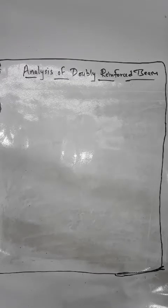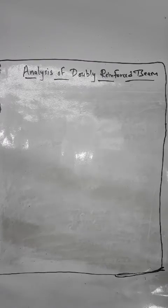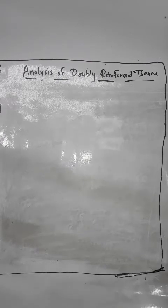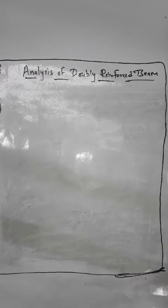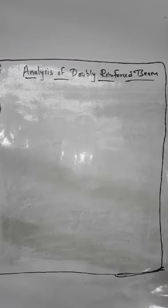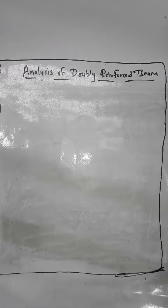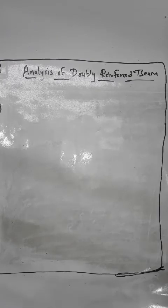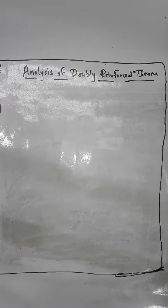Hello everyone, this is our lecture number 15. In this lecture we discuss about the analysis part of doubly reinforced beam. In our previous lecture we discussed the introduction part — where we use doubly reinforced beam and why. According to the definition of doubly reinforced beam, our bending moment is greater than the singly reinforced moment of resistance, meaning we have to provide reinforcement on the compression side also.